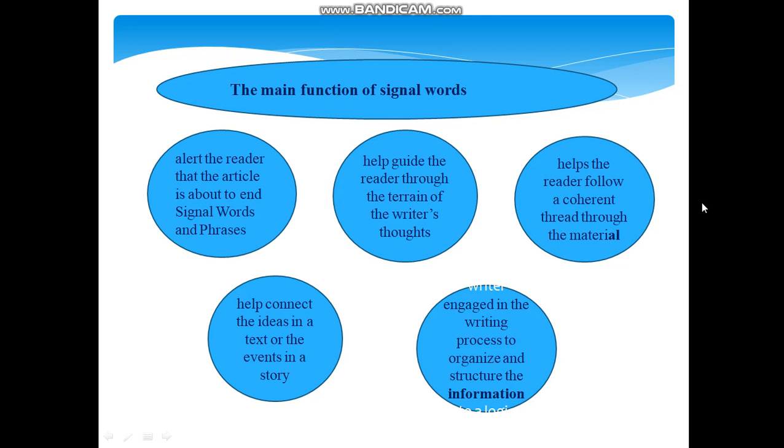Signal words or transitions are sign posts that help to guide the reader through the terrain of the writer's thoughts. They help to connect the ideas in a text or the events in a story. Often, they do this by answering implicit questions. In this case of cause and effect, these are the what or of what the effect and the why of the cause. Different signal words can be used to indicate each. For example, cause and effect in a piece of writing helps the reader to follow a coherent thread through the material. It also helps the writer engage in the processes to organize and structure the information into logical form.